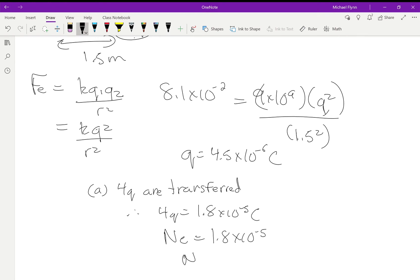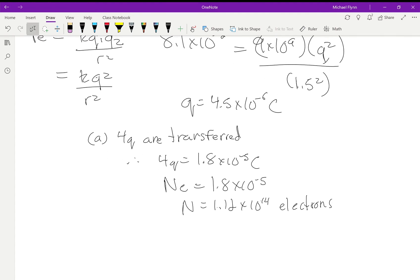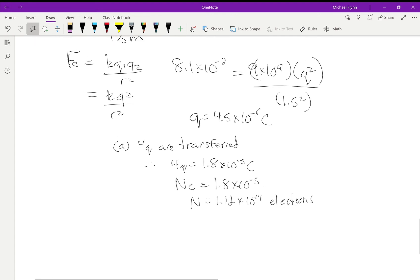N times e would have to equal 1.8 times 10 to the negative 5. So now I just divide by the elementary charge, 1.602 exponent 19 negative. I get 1.12 times 10 to the 14. So N will equal 1.12 times 10 to the 14 electrons. That's a lot of electrons, right? Like a billion is 10 to the 9, a trillion is 10 to the 12, so that's 112 trillion electrons transferred over.